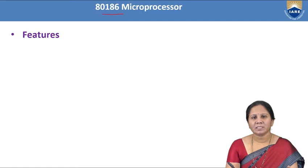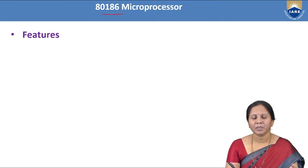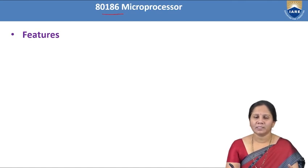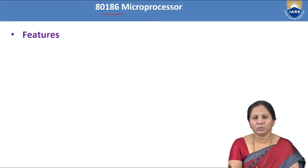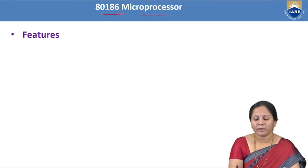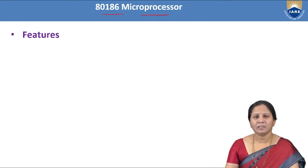Features like the size of the data bus, the size of the address bus, memory size, and in how many operating modes it can operate — all these are different features we have to consider. Before going into a detailed discussion about the 80286 microprocessor, let us first have a small idea about the 80186 microprocessor and see its different features.